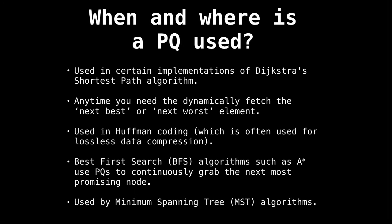So when and where is a priority queue and a heap used? Probably one of the most popular places we see priority queues is in Dijkstra's shortest path algorithm to fetch the next nodes we explore. Priority queues are really handy anytime you also need a behavior in which you need to dynamically fetch the next best or the next worst element. They're also used in Huffman encoding, which is often used for lossless data compression. Many best first search algorithms use priority queues in their implementation to continuously grab the next most promising node in the graph as it's being traversed. And finally, we also see priority queues in Prim's minimum spanning tree algorithm on directed graphs. So it seems priority queues are really important, especially for graph theory algorithms, which is where we see them often.